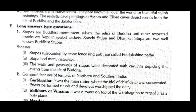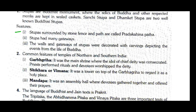Long answer type question. Question one: What is a stupa? Describe its features. Stupas are Buddhist monuments where the relics of Buddha and other respected monks are kept in sealed caskets. The Sanchi Stupa and Dhamek Stupa are two well-known Buddhist stupas. Features: stupas are surrounded by a stone fence and the path is called pradakshina patha. Stupas had many gateways; the walls and gateways were decorated with carvings depicting events from the life of Buddha.